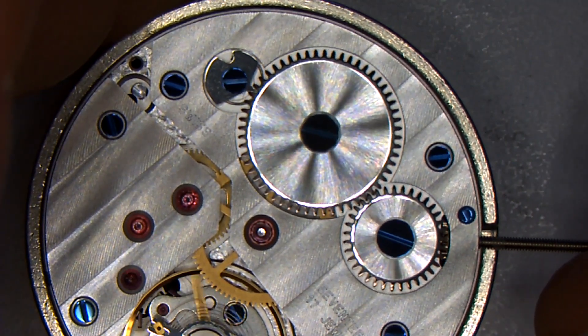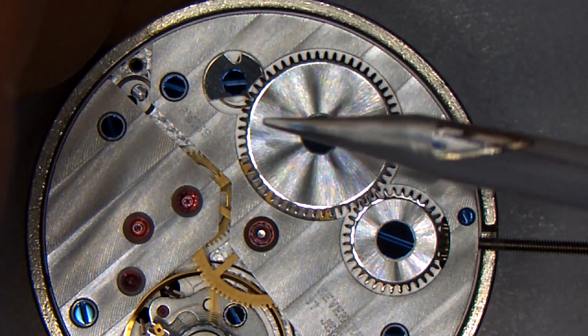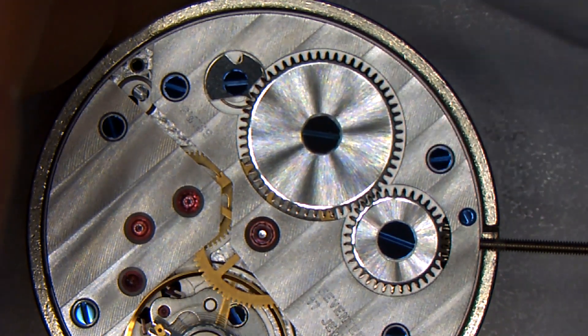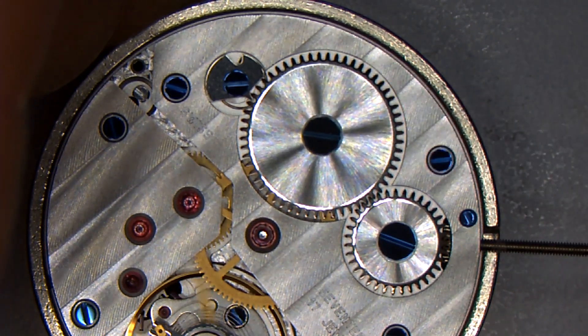And then as the ratchet wheel recoils when I let my hand off of it from the mainspring, there is actually two teeth on the ratchet wheel that is engaging with this flat area right here on the click.